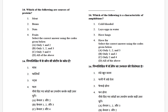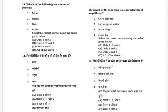Which of the following are sources of protein? The options are: meat, beans, nuts, and fruits. The answer is B — options 1, 2, and 3 (meat, beans, and nuts).